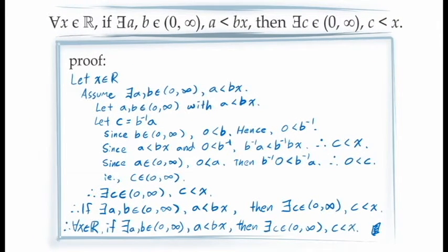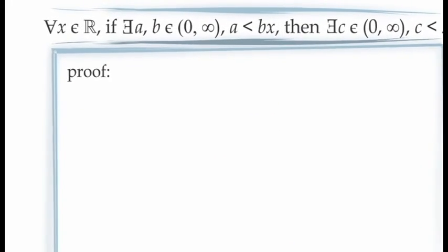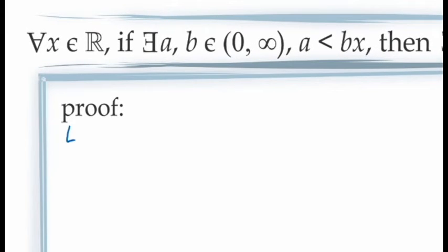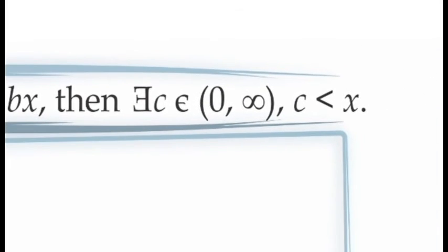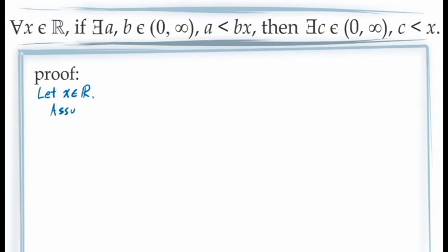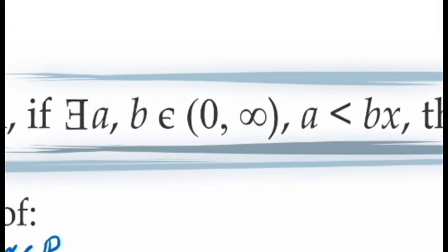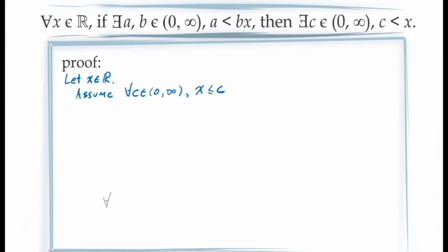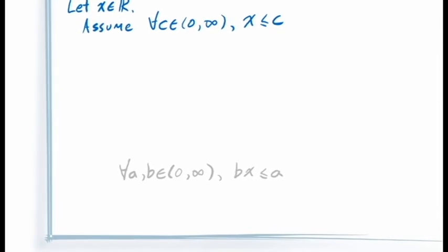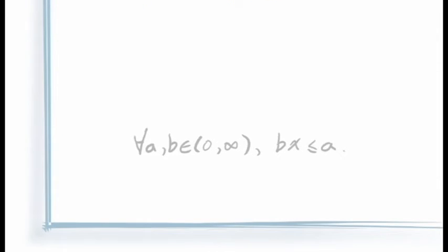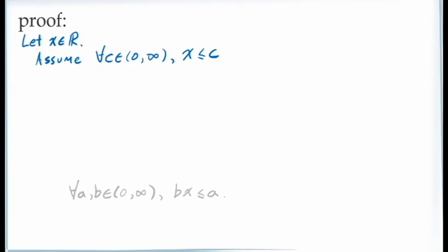Let's now look at how this proof would look using a proof by contraposition. Again, since we're proving this statement for all values of x in the real numbers, we need to let x be an arbitrary real number. If we're using a proof by contraposition, we need to assume that the consequent of our conditional statement is false — in other words, assume that for all values of c in the interval from 0 to infinity, x is less than or equal to c. We're then required to demonstrate that the antecedent is false — that is, for all values of a and b in the interval from 0 to infinity, b times x is less than or equal to a. Notice that this statement begins with a universal quantifier, so we need to use the principle of universal generalization, proving it for arbitrary values of a and b in that interval.